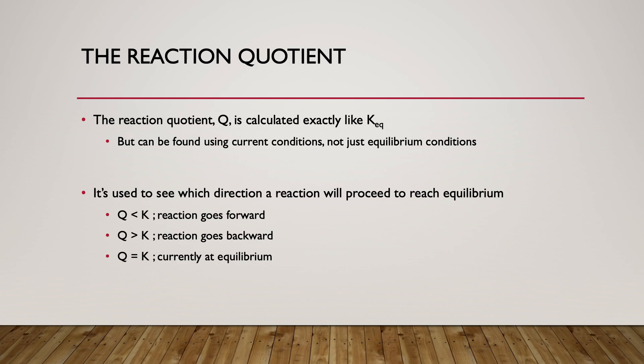If Q is less than K, we don't have enough products yet, so the reaction will go forward. If Q is already too big, we have more products than we should, so the reaction goes backwards to reach equilibrium. If Q equals K, we're already at equilibrium and the reaction won't shift in any particular direction.